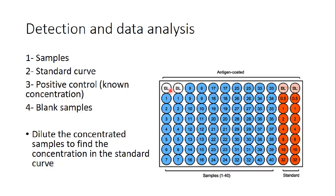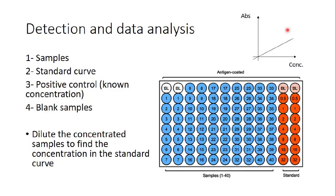After applying all ELISA steps, I measure the absorbance of every well and draw a standard curve: absorbance versus concentration. Since I know the concentrations of the standard curve samples, I use the absorbance of each unknown sample to determine its protein concentration. If a sample is very concentrated, I dilute it to fit within the standard curve range. This is everything about ELISA — I hope you now better understand how ELISA works.